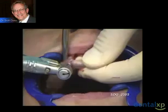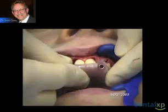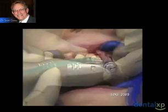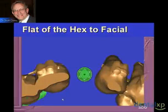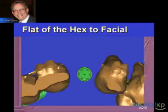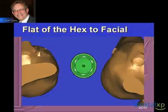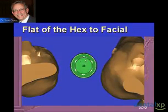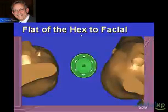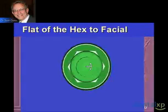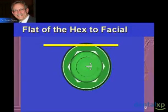Here you see that the apex of the hex is pointed towards the facial — but we want the flat of the hex towards the facial. We can utilize the virtual tools in the interactive software application, such as Simplant, to point the flat of the hex towards the facial. Once we do that, it opens up another whole world of being able to connect to the restorative component — here we see where the dot on the prefabricated abutment correlates to the flat of the hex on the facial, and we already have a predefined margin in this area.